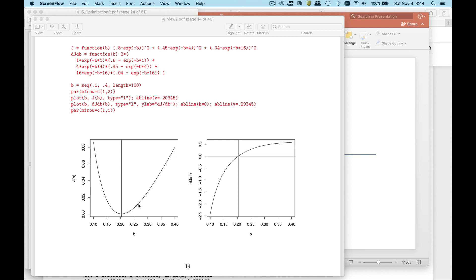What we really want to do is find where this j function is at the bottom, the smallest value. We want to minimize the sum of squared errors which means finding the minimum of this j function.